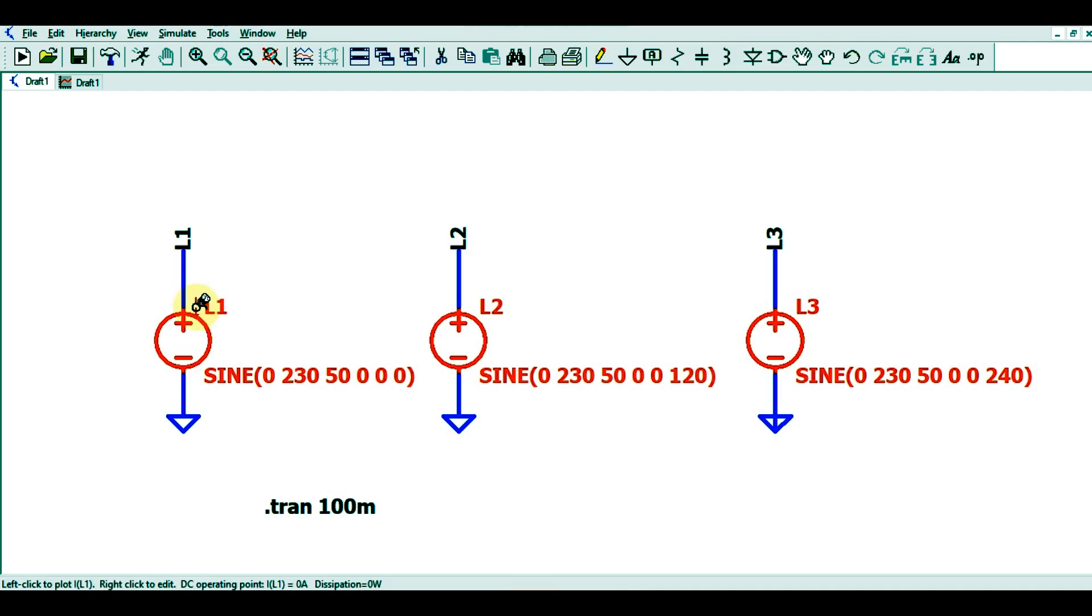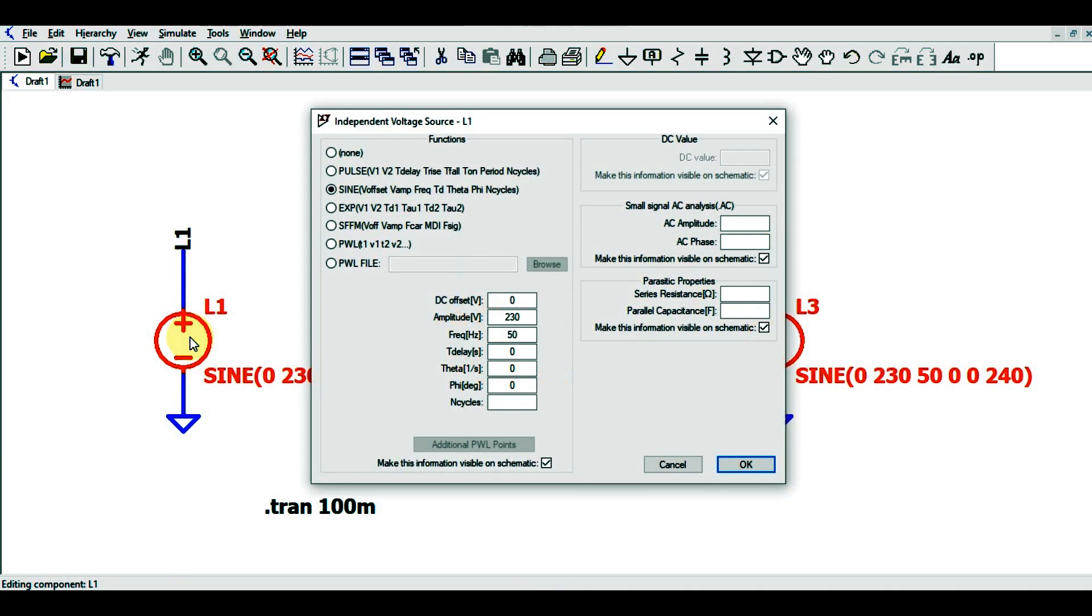This is phase 1 (L1), phase 2 (L2), and phase 3 (L3). If you right-click on L1, you can see the properties: DC offset is 0, amplitude is 230, frequency is 50 Hertz, and delay is 0. It is important to understand that the phase degree is 0 here